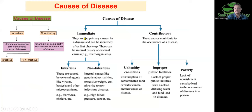Let us look at the causes of disease. You can classify disease causes into two major categories: immediate cause and contributory cause. Immediate causes are those actually responsible for the disease. Contributory causes are those that support the development and spread of the disease. Immediate causes can be infectious or non-infectious. Infectious causes are biotic or living causes, while non-infectious causes are not in the form of microorganisms but include genetic abnormality, weight gain, high blood pressure, and diabetes.